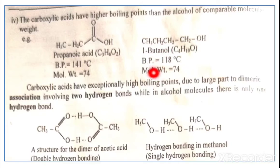Why does this happen? Carboxylic acids have exceptionally high boiling points due to dimeric association involving two hydrogen bonds, while in alcohols there is only one hydrogen bond involved.